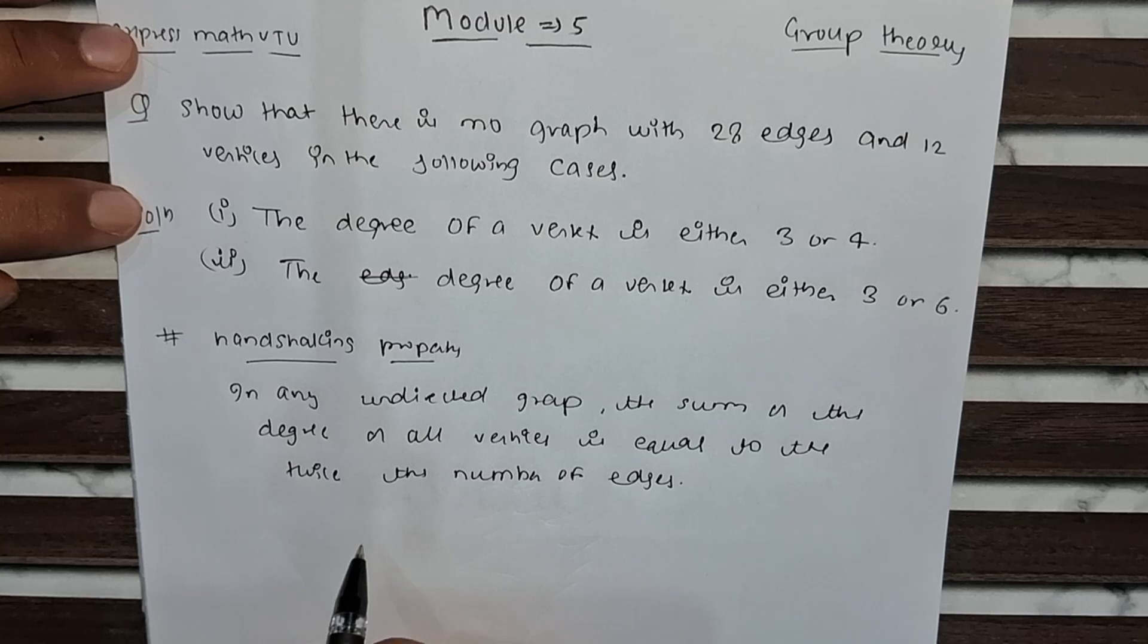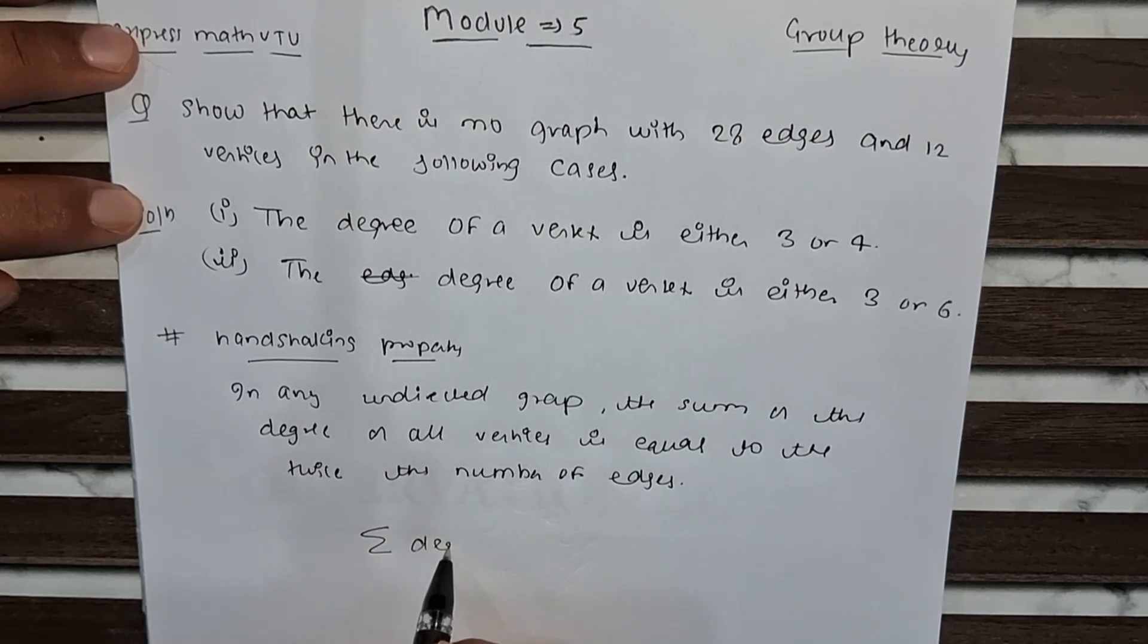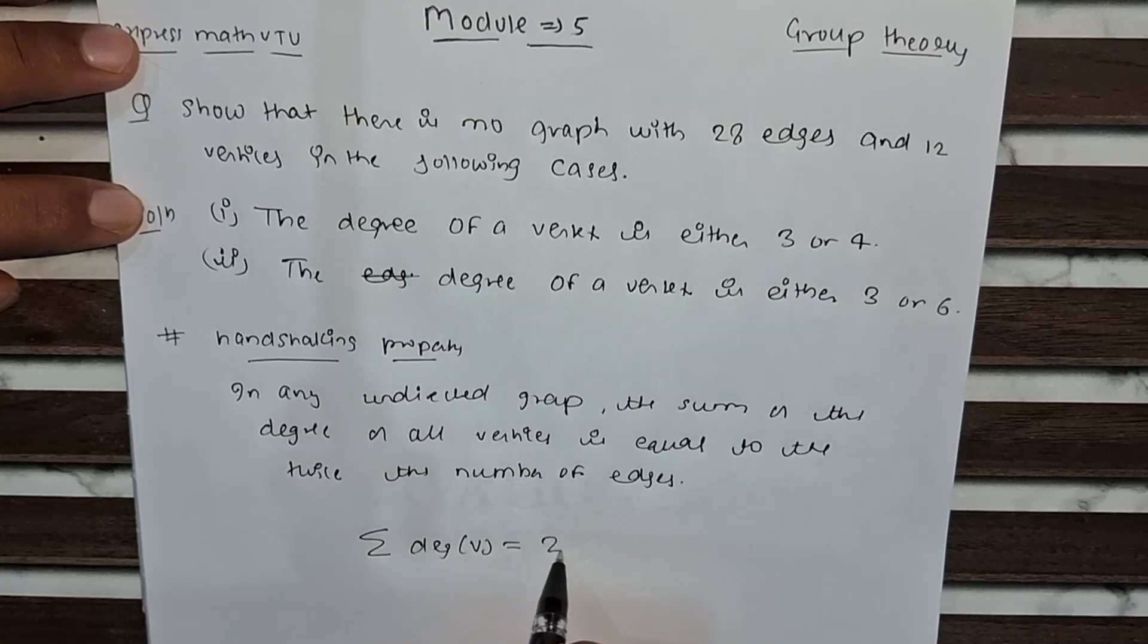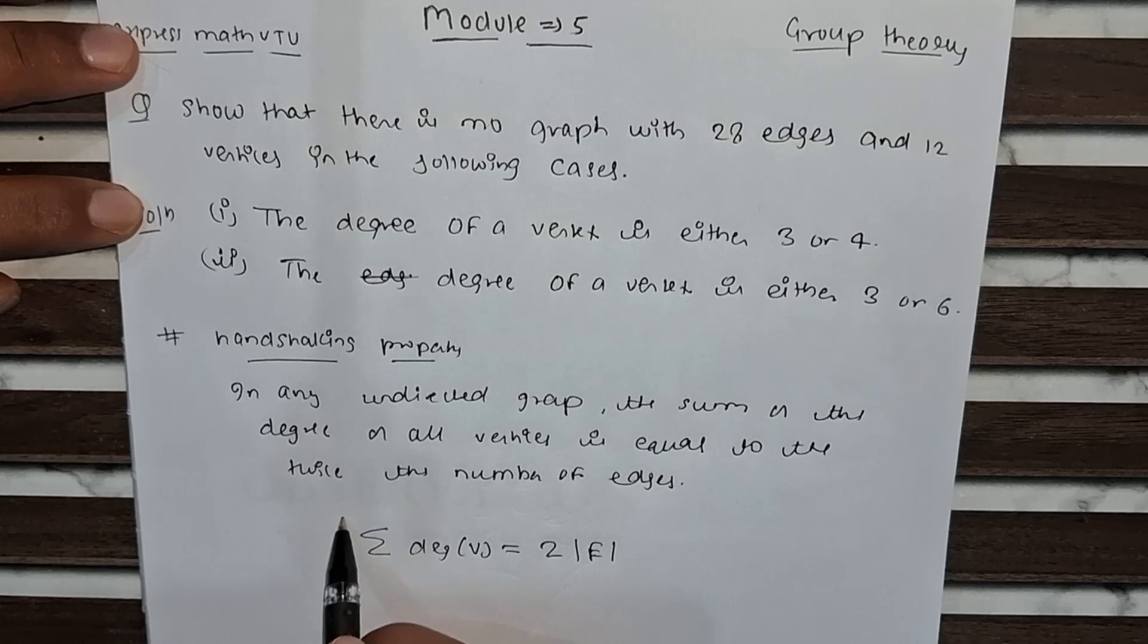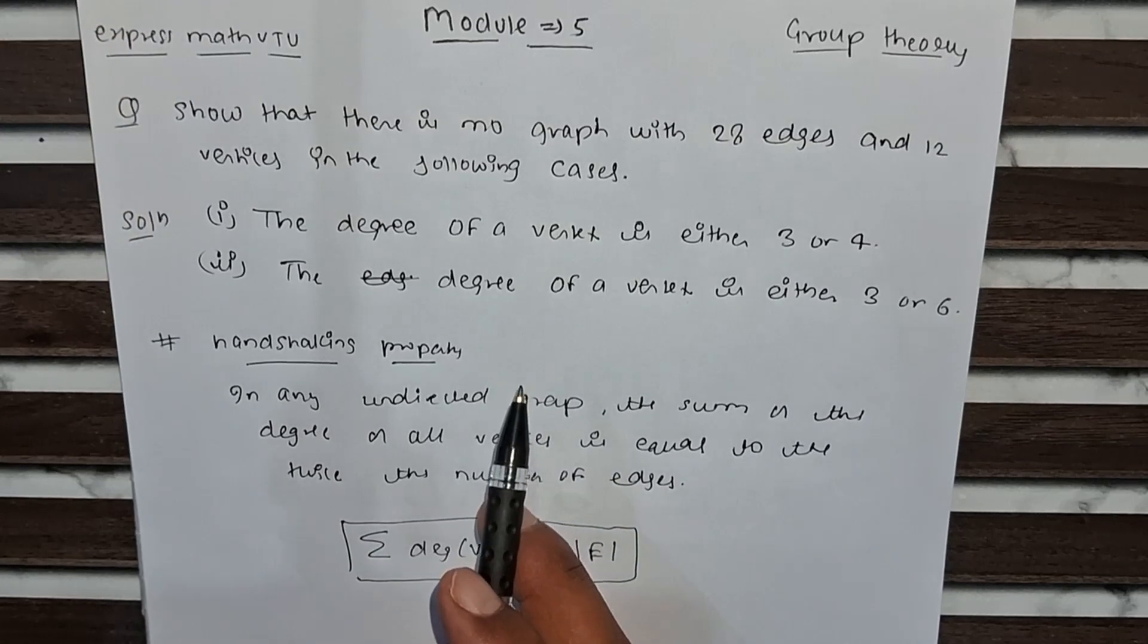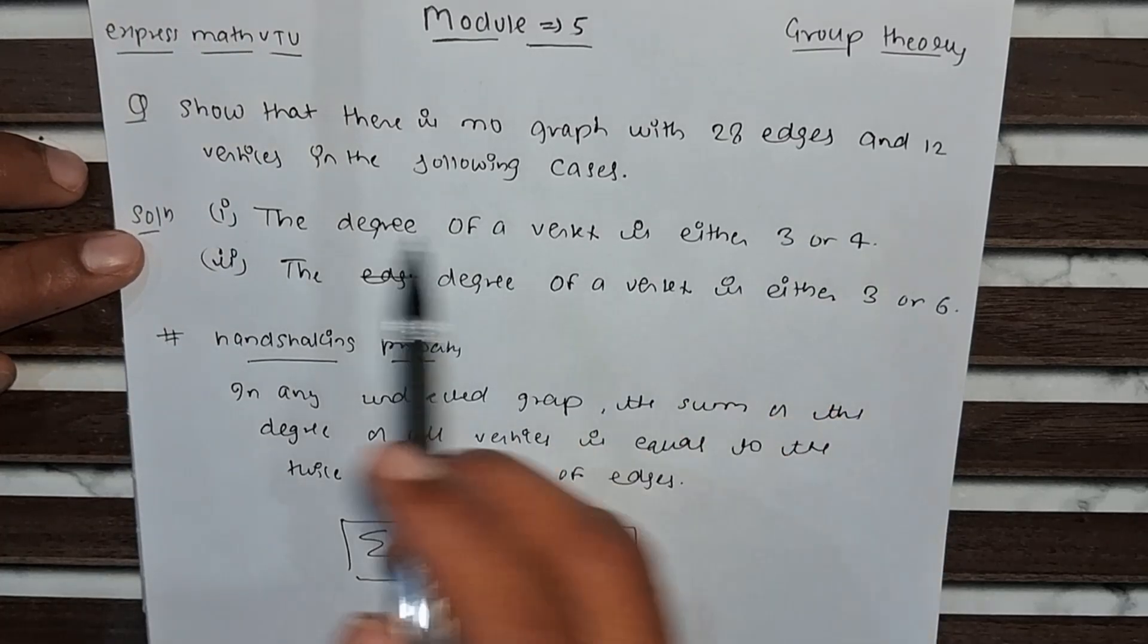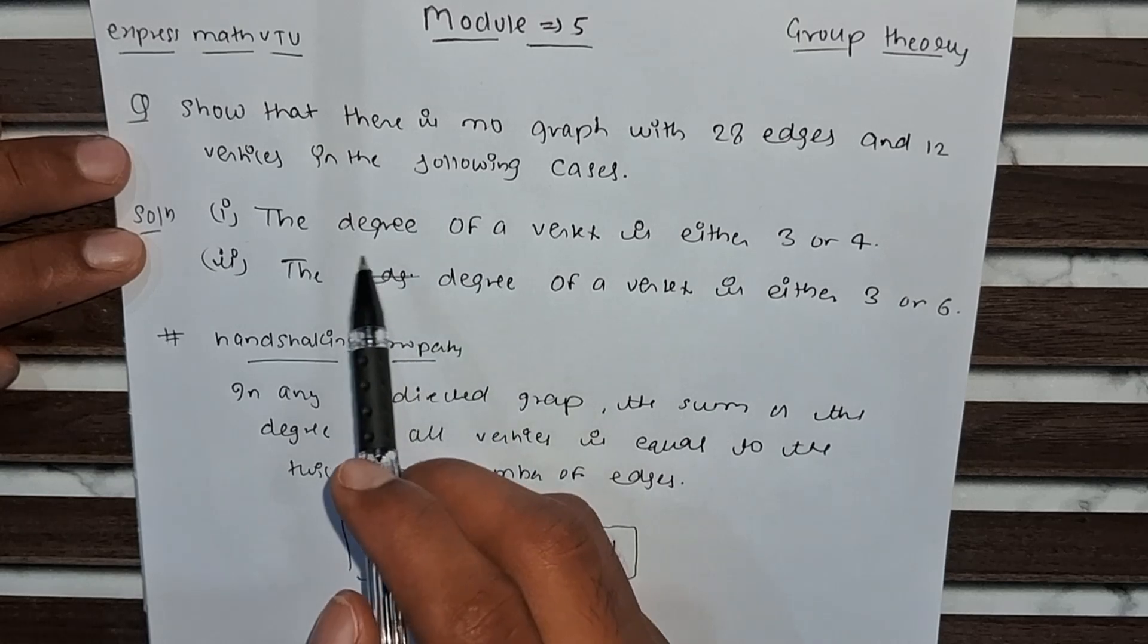So this is the statement of handshaking property. What is the expression? The expression is sum of all degree of the vertices is equal to 2 times the number of edges. By using this expression we have to solve this question. So in this question, 20 edges are given and 12 vertices are given.